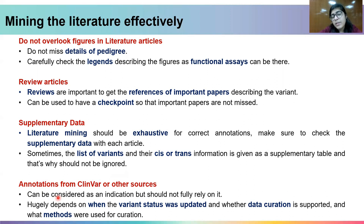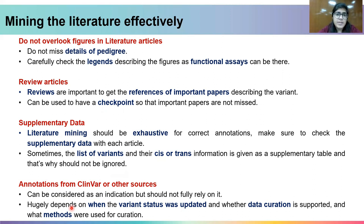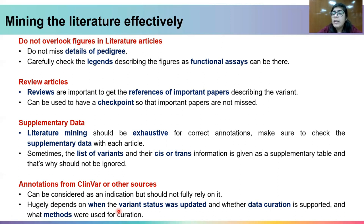Annotations from ClinVar — for example, if a variant is classified as pathogenic or benign — can be considered as an indication, but you should not fully rely on them. Many times, a variation listed as likely pathogenic in ClinVar can fall under VUS when you do its ACMG annotation yourself, or vice versa. It is very important to do the complete ACMG annotation to get the correct result. It also usually depends on when the variant status was last updated in ClinVar and whether data curation is supported, and what methods were used for curation.